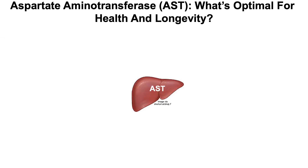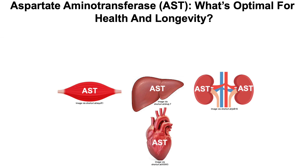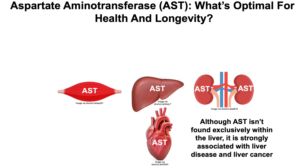So first, AST — aspartate aminotransferase — is a protein that's produced within liver cells, but it's also produced within other tissues, including skeletal muscle, the kidney, and heart. Now, although AST isn't found exclusively within the liver, it's strongly associated with disease and liver cancer, as we'll see in a minute.